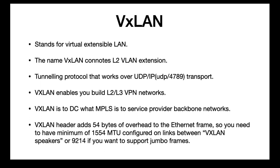The VXLAN header is about 54 bytes and gets added to the Ethernet frame. When provisioning MTUs on the links in your data center, you need a minimum of 1554 bytes of MTU configured on the links from one VXLAN speaker to another. If you're going to support Jumbo frames, then you need 9214.